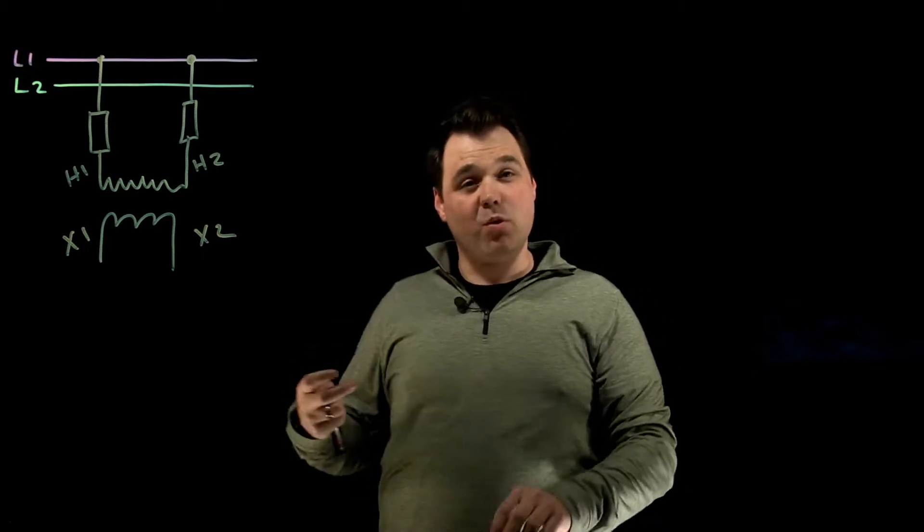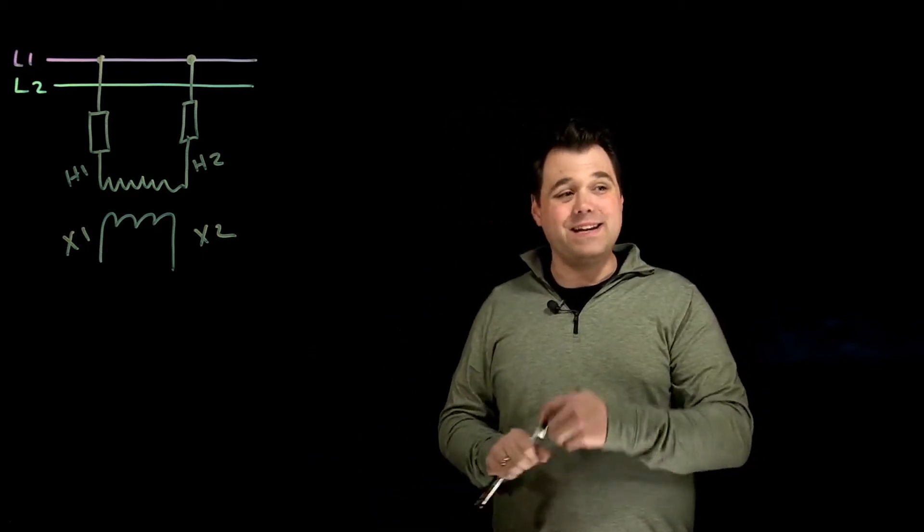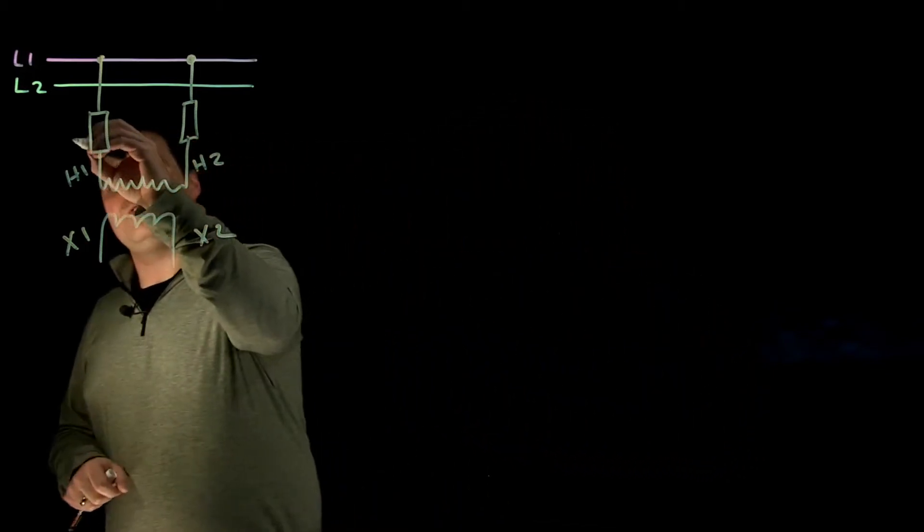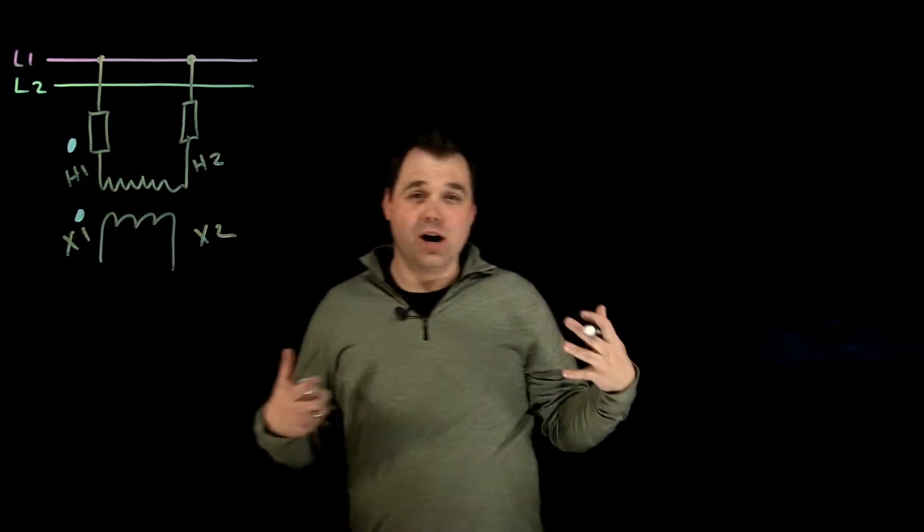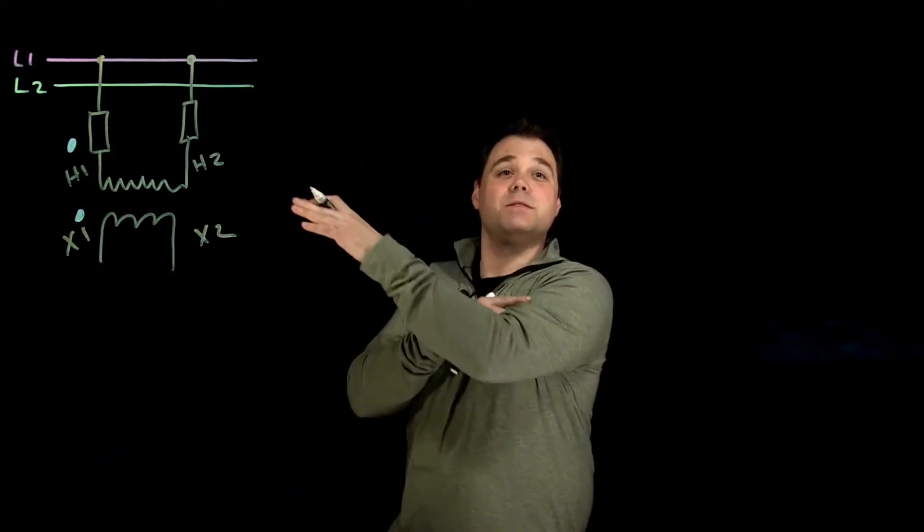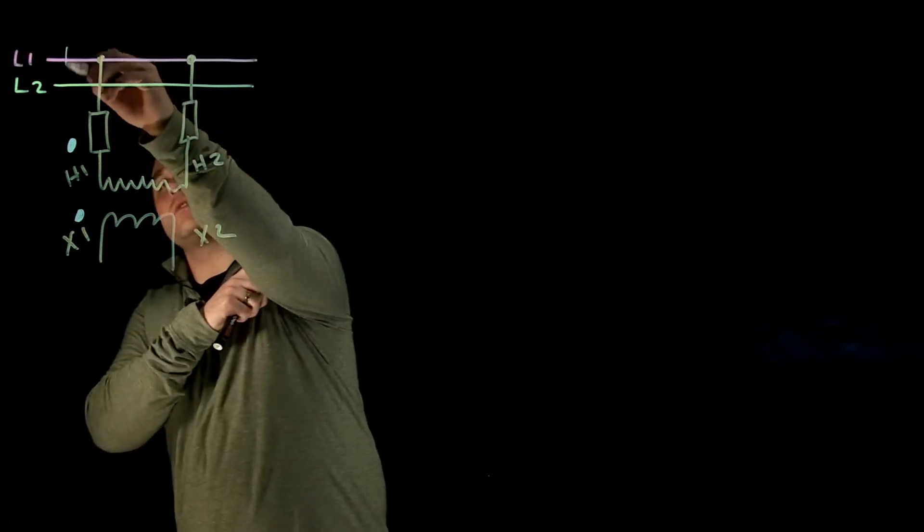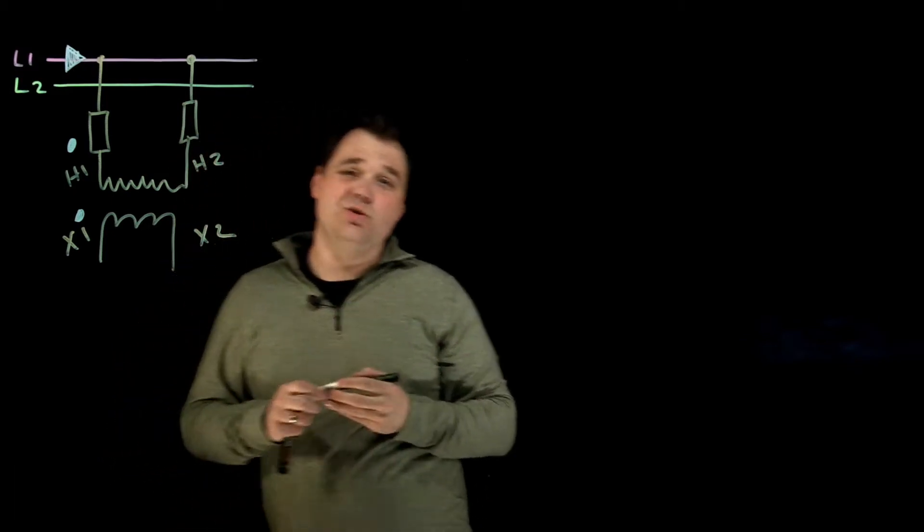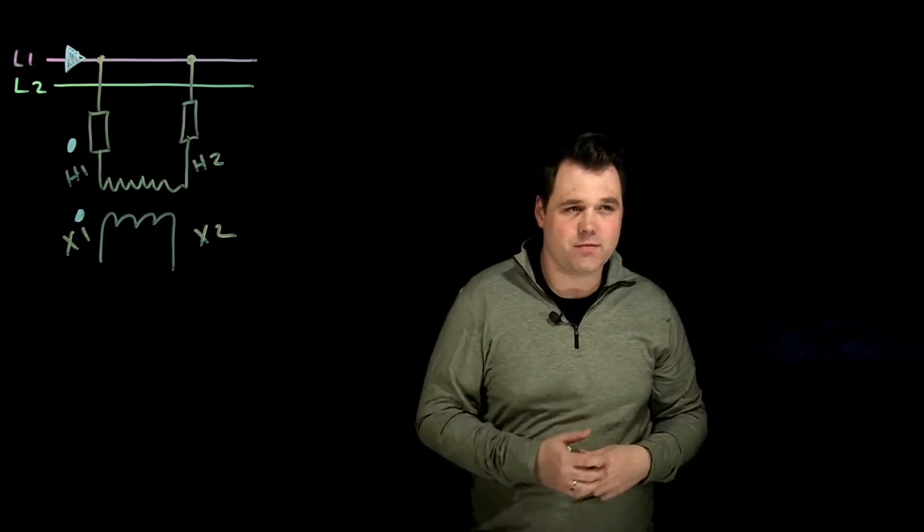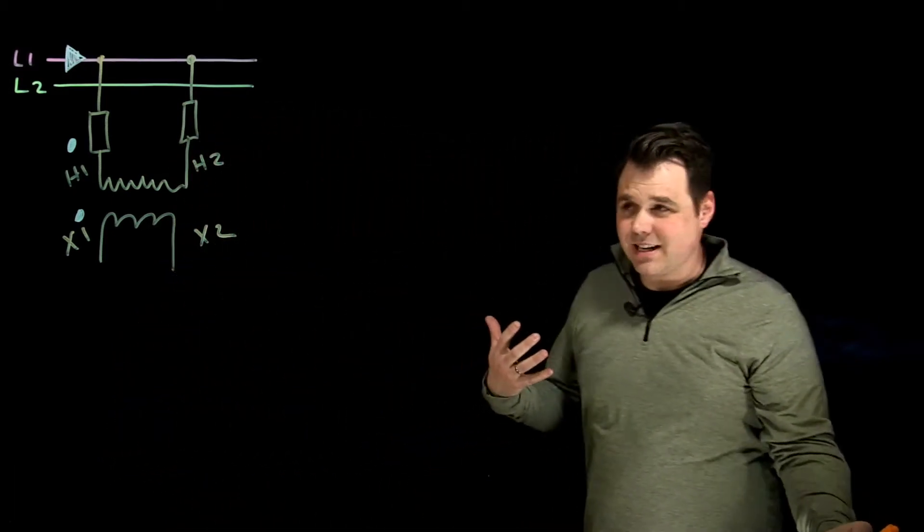One other thing that is important to note is they will always have a white dot on them, or often a big white dot. The white dot is meant to go towards the supply or towards the source. So current flows into the white dot, ideally if the current is coming from the source. That's the idea behind that white dot.